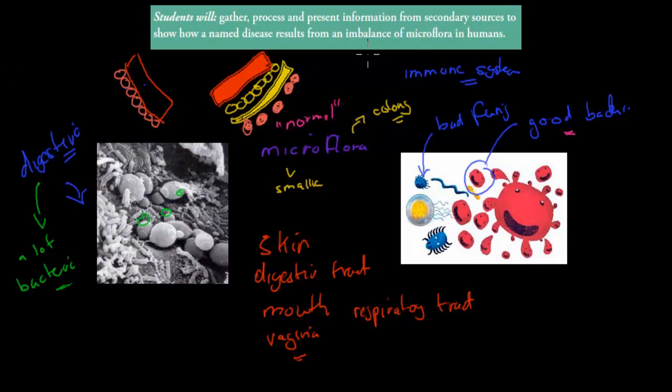So the dot point itself says students will gather and present information from secondary sources to show how a named disease results from an imbalance of microflora in humans. We need to talk about a named disease.